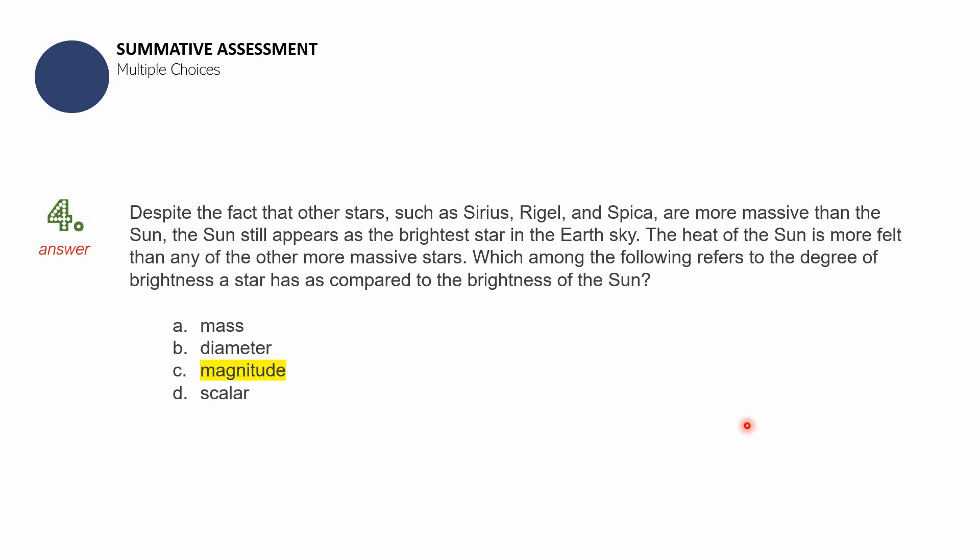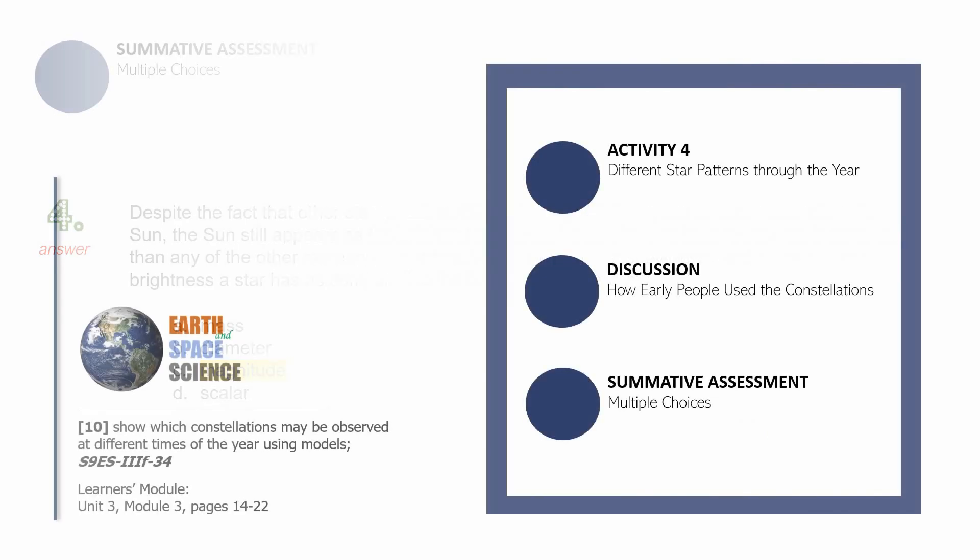For question number four, the answer is C — magnitude. Please report your score on the upper right-hand corner of your paper. If you are using your science notebook, report it on the upper right-hand corner of your paper as well, and keep them until I check them.